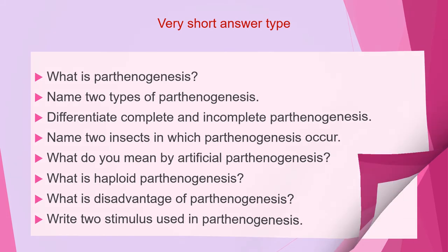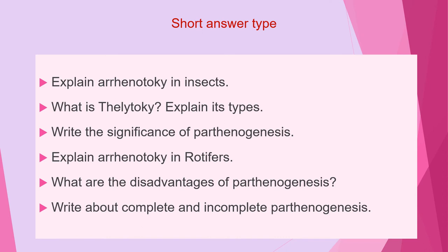The second category questions are short answer type questions. The first question of this category is: explain Arhenotoky in insects. Second question is: write the significance of Parthenogenesis. Next is: explain Arhenotoky in rotifers. What are the disadvantages of Parthenogenesis? And the last question of this category is: write about complete and incomplete Parthenogenesis.